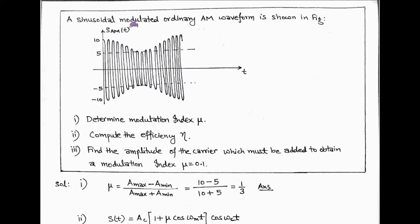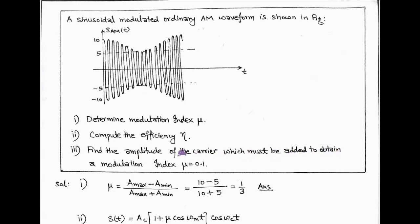Now the next question is: a sinusoidal modulated ordinary AM waveform is shown in the figure. First, we have to determine the modulation index mu. Second, compute the efficiency eta. And in the third part, we have to find the amplitude of the carrier which must be added to obtain a modulation index mu equals 0.1.